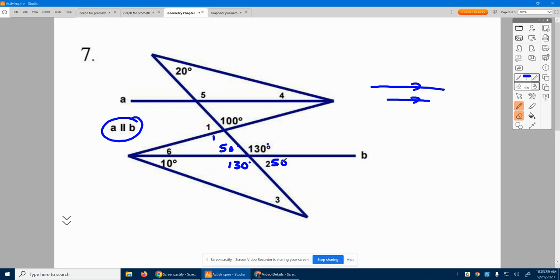If this is 100, its vertical angle down here is 100. Its linear pair right here is 80. And then its vertical across from there is 80. So I filled in around.